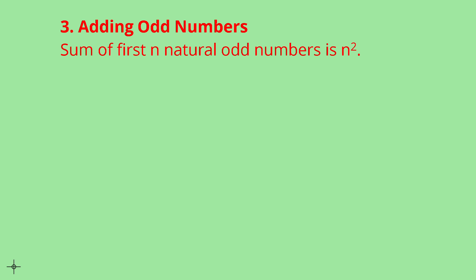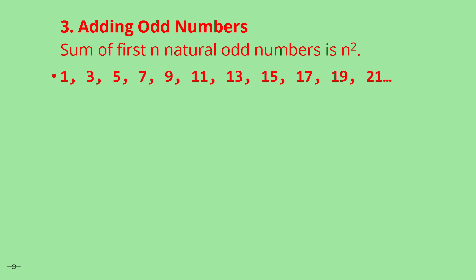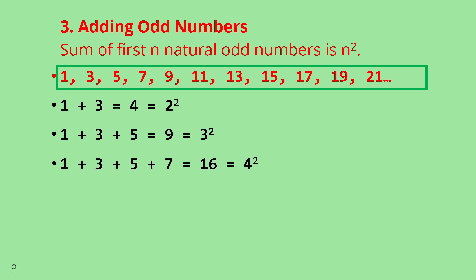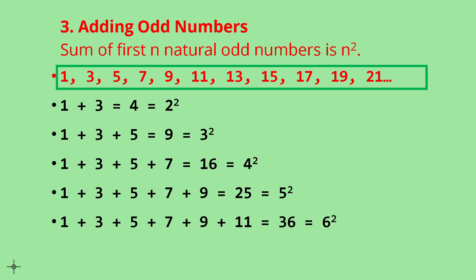Now let's discuss how odd numbers are related to square numbers. If we add consecutive odd numbers starting from 1: 1 + 3 = 4 (a perfect square); 1 + 3 + 5 = 9 (a perfect square); adding 4 consecutive odd numbers from 1 gives 16; adding 5 consecutive odd numbers gives 25 (5 squared); adding 6 consecutive odd numbers gives 36 (6 squared). So the sum of n consecutive odd numbers starting from 1 equals n squared.